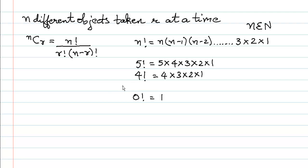nCR can also be written as n and R in a bracket, and they have the same formula: n factorial upon R factorial into (n minus R) factorial.